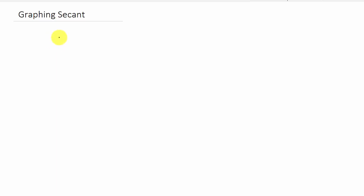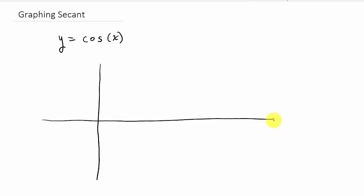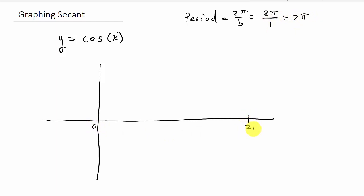As a quick review, remember if you have y equals cosine x. We need the period, which is 2 pi over b. B is the number in front of x, so that's a 1, and our period is 2 pi. So we're going to graph from 0 to 2 pi.